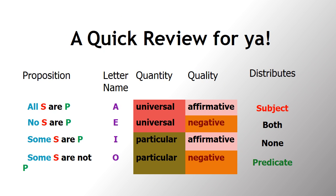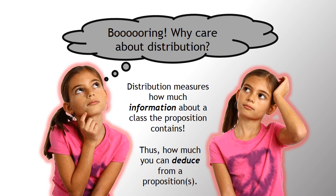Remember distribution? Which proposition distributes which term? A propositions distribute the subject. E distributes both. I distributes none. And O distributes the predicate — that last one was the hardest to remember. Distribution measures how much information about a class or term the proposition contains, and that's a measure of how much you can deduce from it.